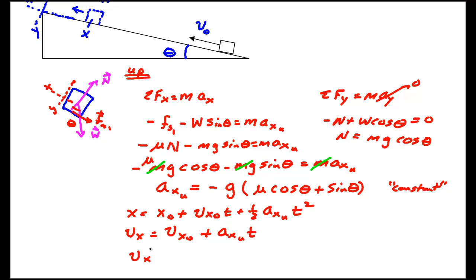I know that vₓ is vₓ₀ plus aₓ going up times time. And vₓ² is vₓ₀² plus 2 times aₓᵤ, the acceleration on the way up, times x minus x₀.